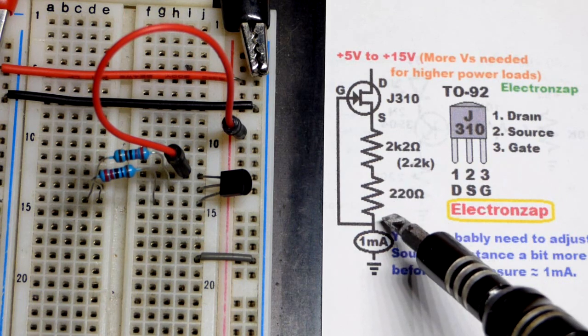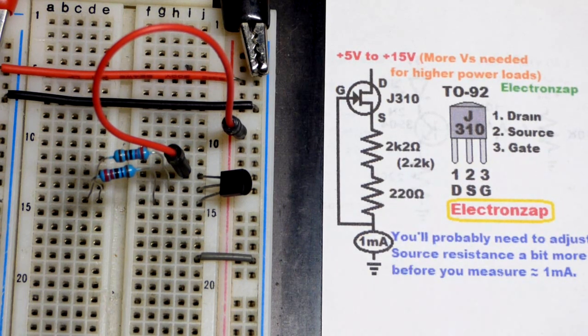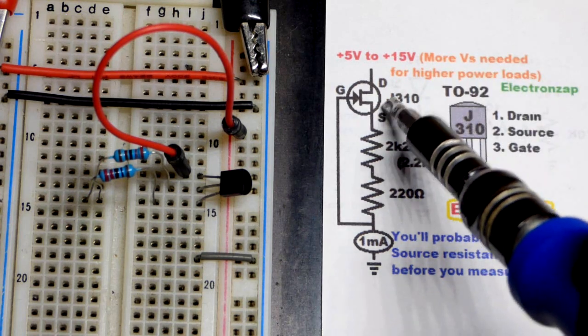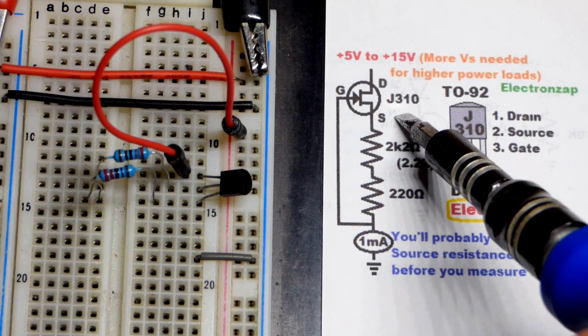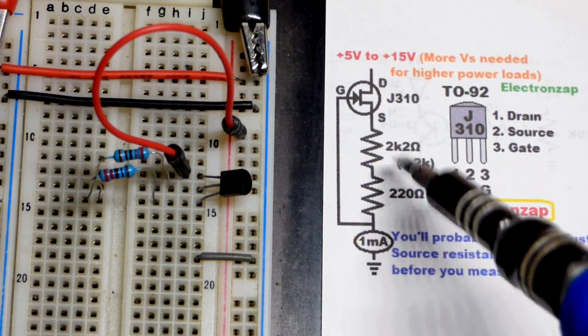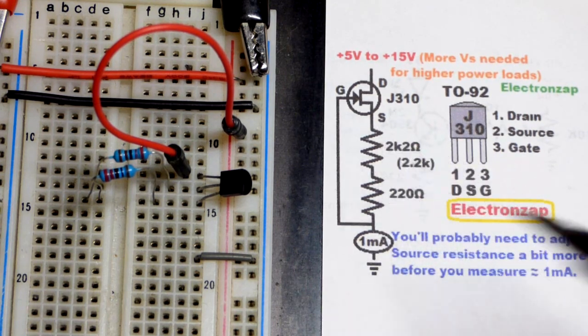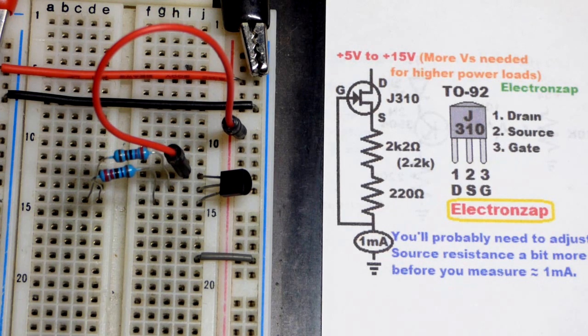I just tried different value resistors until I closed in on 1 milliamp of current. There's variation even with individual J310s. And so if you build this yourself, there's a good chance you're going to have to change that resistance. Just be aware of that.